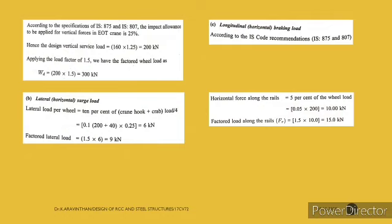After applying the impact factor, the design wheel load is 200 kN. Applying the load factor of 1.5, the factored design load per wheel is 200 × 1.5 = 300 kN. This 300 kN vertical load will be used for all subsequent design calculations.